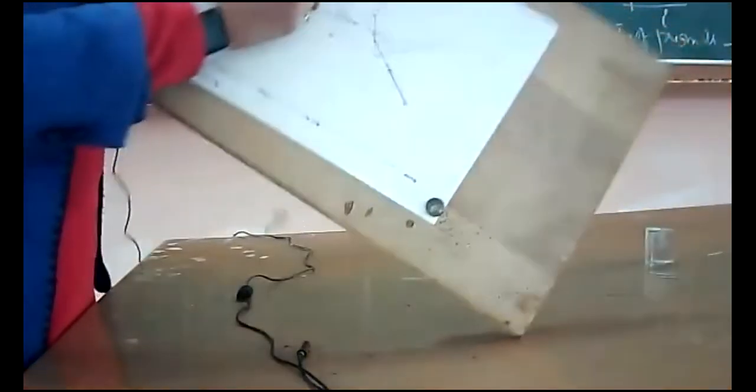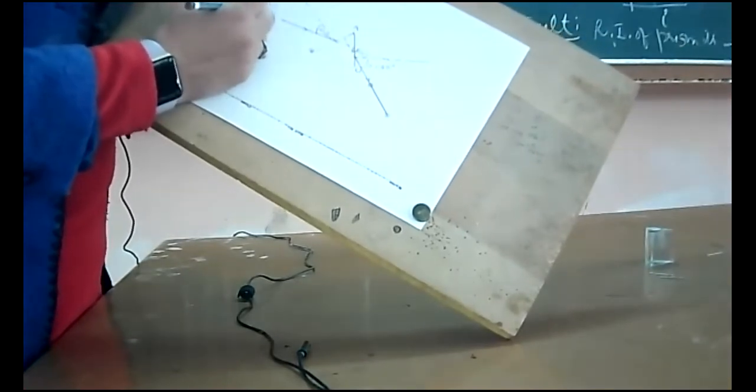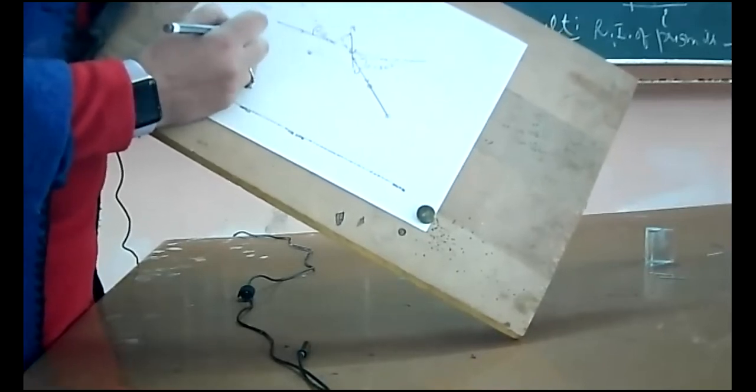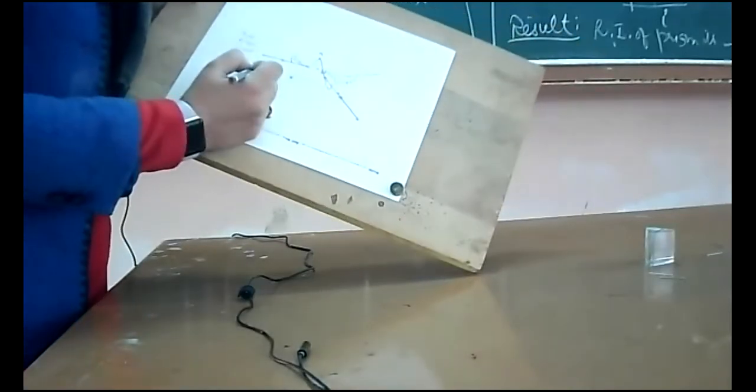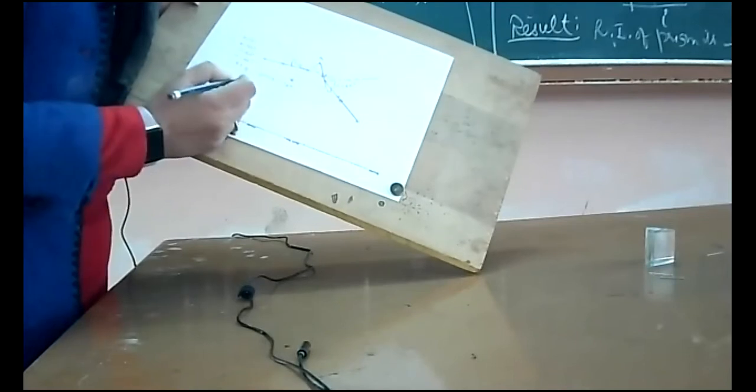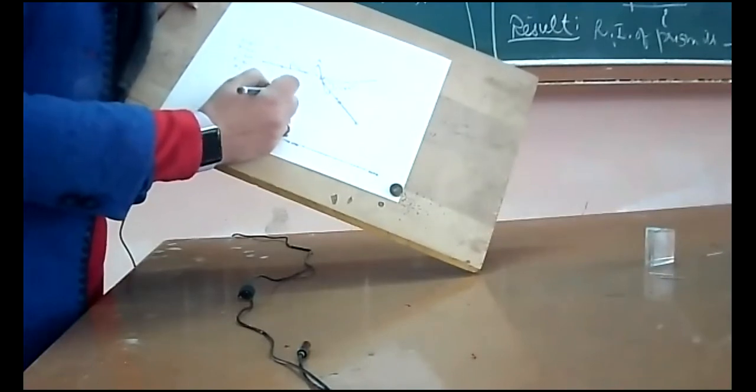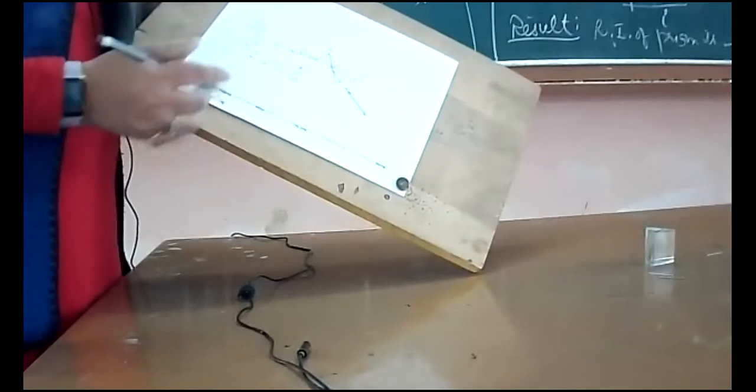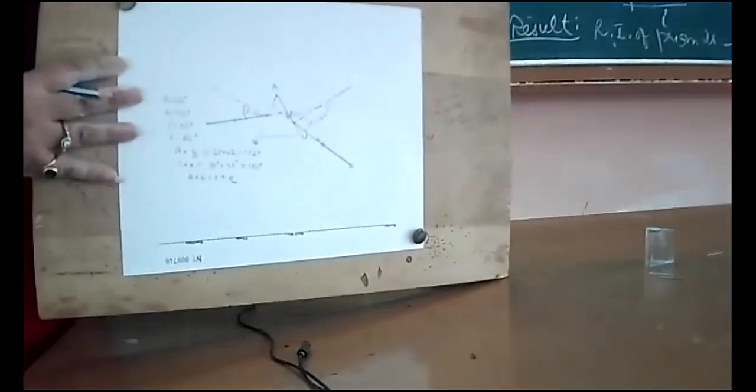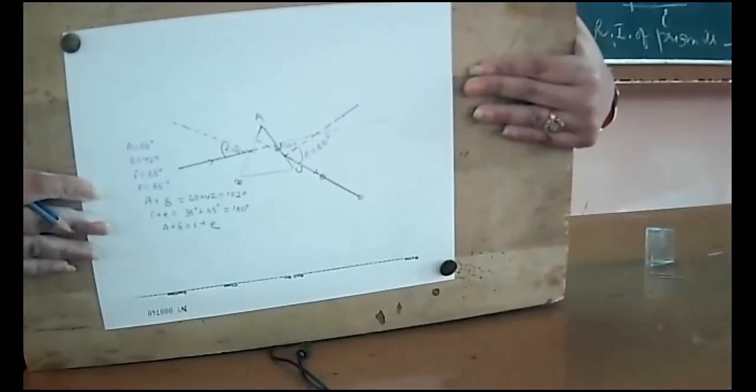I will write here: A is 60 degrees, delta is 42 degrees, I is 35 degrees, and E is 65 degrees. Let me check: A plus delta is 60 plus 42 equals 102 degrees. And I plus E is 35 plus 65 equals 100 degrees. Almost equal, so we can write A plus delta is approximately I plus E. This is one complete case.